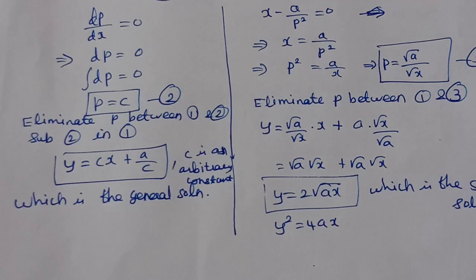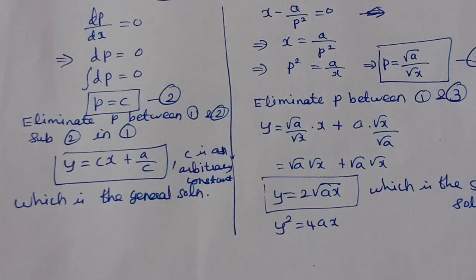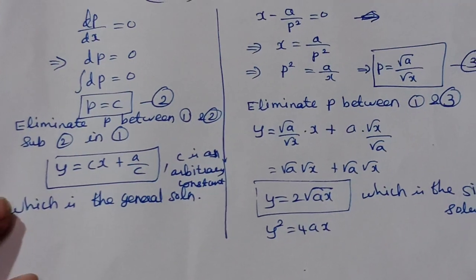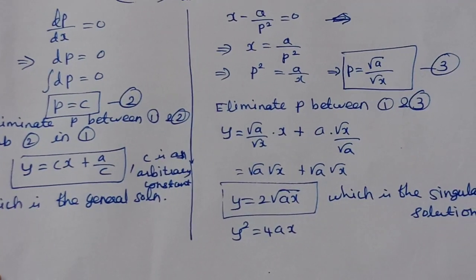So, Clairaut's form: write the Clairaut's form, and write down the solution of the Clairaut's form. In the first unit — solvable for P, X, Y — Clairaut's form is a particular form of Y. This will solve your 5-mark question. Bye-bye.